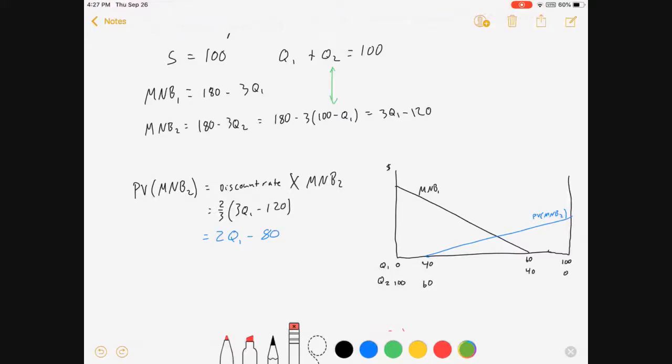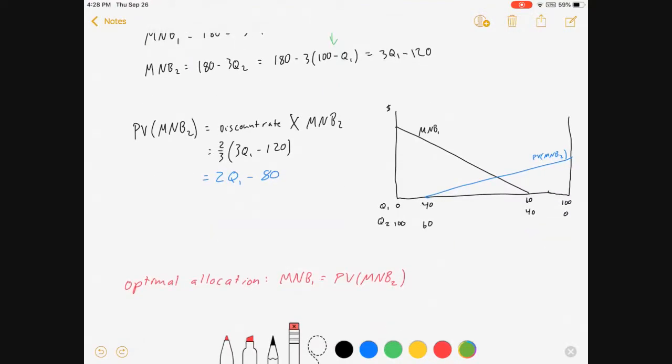Marginal net benefits for period 1 decrease as we go to the right, as we increase Q1. Marginal net benefits in period 2 rise because they're being measured backwards. For period 2, we've got 0 on the far right and 100 on the far left. And so these are mirrors of each other. The only difference in the mirror is we've put a present value sign on the MNB2 curve.